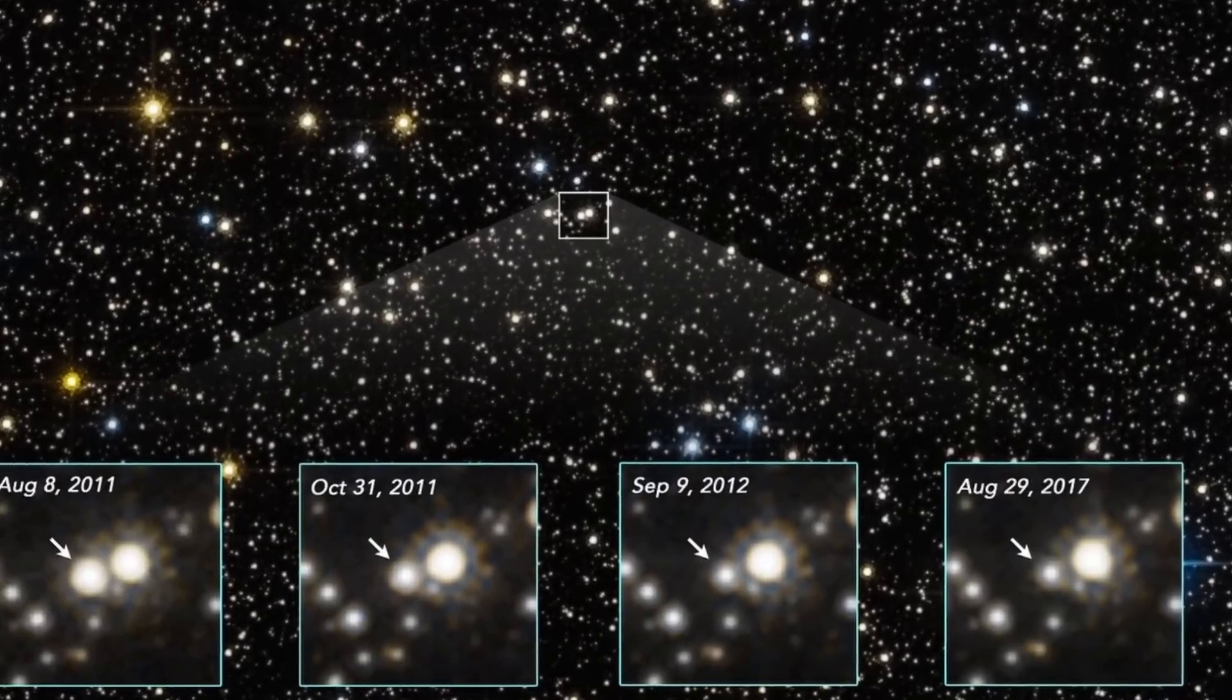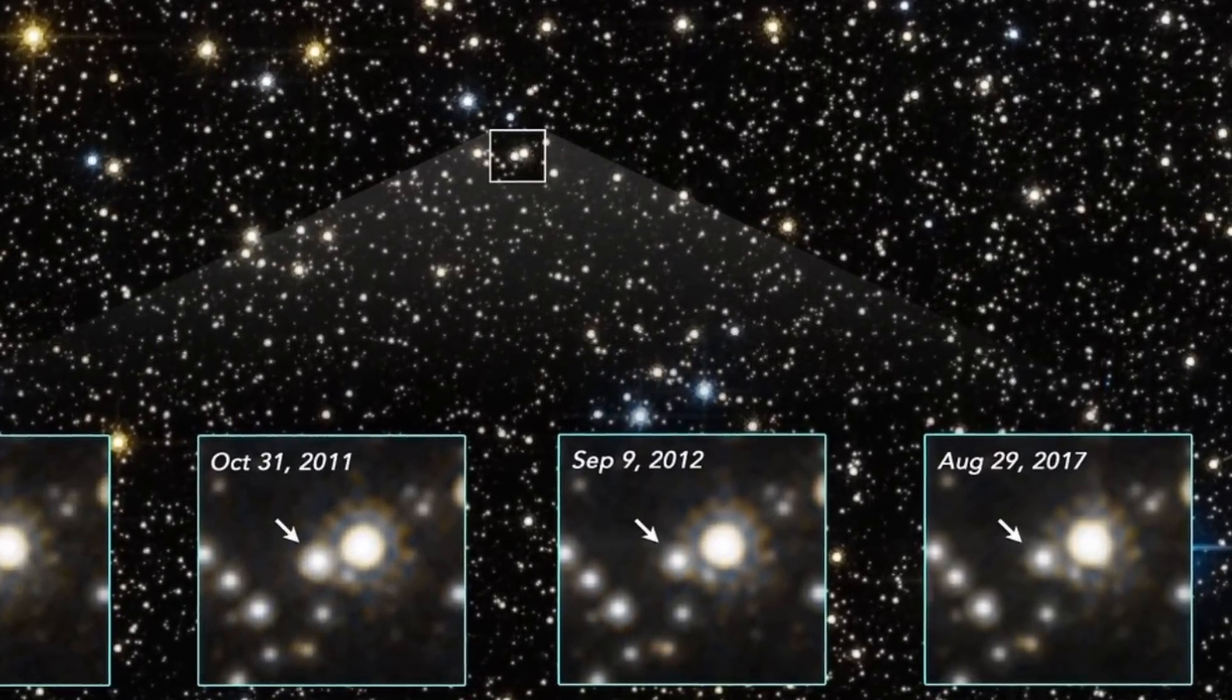This particular detection seems to be already unusual in a sense that the black hole or the neutron star does not seem to really be what we expected it to be. It seems to be either the smallest black hole or the biggest neutron star out there—either way, a mystery that will probably be solved in the next few years.